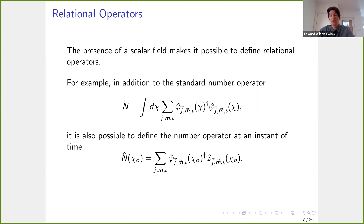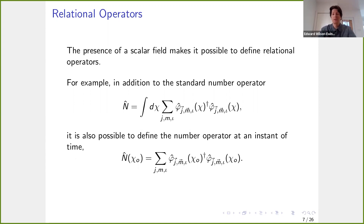You have to be careful because chi has a continuous spectrum, so this operator will be distributional. You need to regulate this expression appropriately. But the key point is that you can define this number operator, which tells you how many quanta you have in your state at some value chi-naught. As chi-naught changes, we can see how the state evolves with respect to this scalar field, and this becomes our time variable.